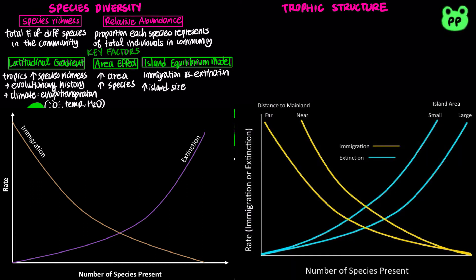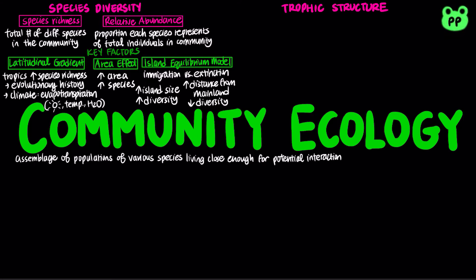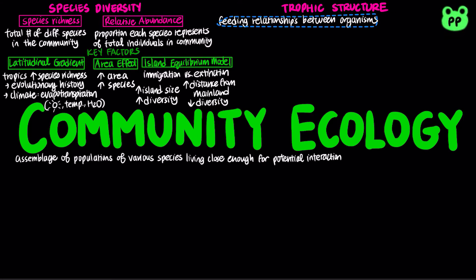The larger the island size, the higher the diversity, and the longer the distance from the mainland, the lower the diversity. Trophic structure is the feeding relationships between organisms in a community.